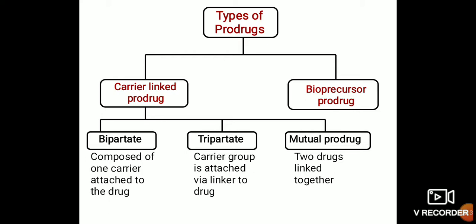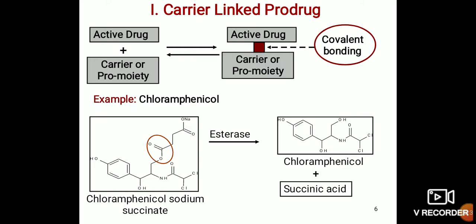In carrier-linked prodrugs, the combination of the active drug plus carrier is taken. The active drug and the carrier moiety are linked with a covalent bond, and then enzymatic action occurs. The example is chloramphenicol sodium succinate — with the enzyme esterase, it is converted into chloramphenicol plus succinic acid. Chloramphenicol is the active drug and succinic acid is the carrier or pro-moiety.